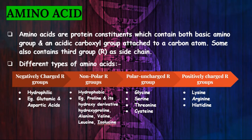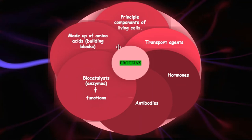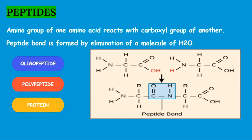Now let's go to proteins. Proteins are made up of amino acids as these are the building blocks. These are principal components of living cells. These also function as enzymes and biocatalysts, in hormones, in antibodies, and as transport agents as well. Proteins are made by peptide bonds.